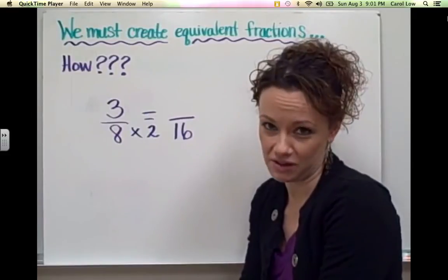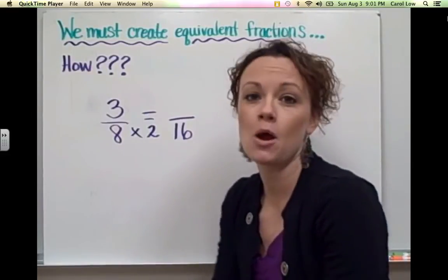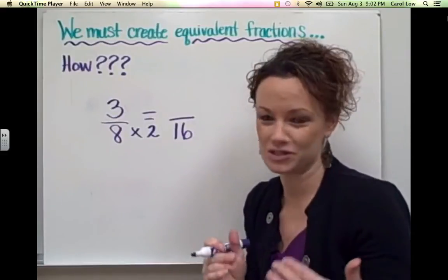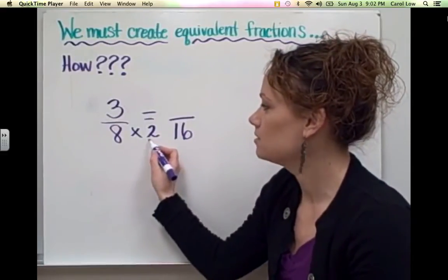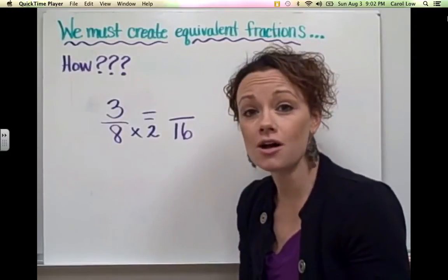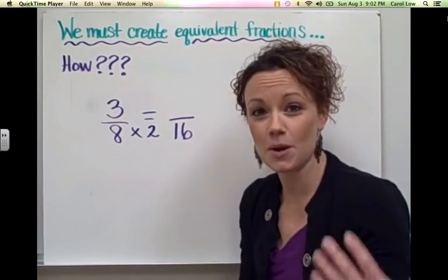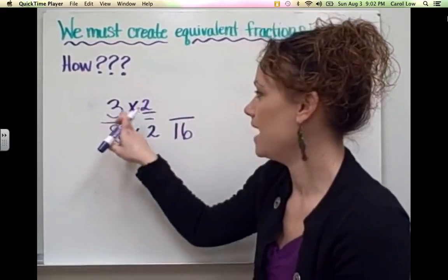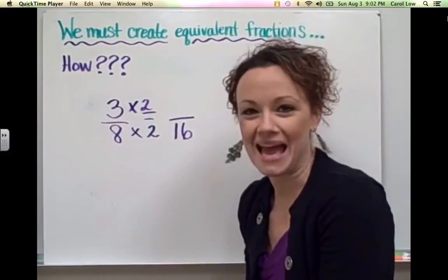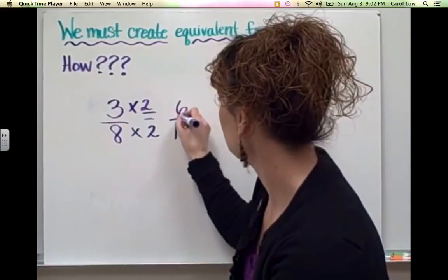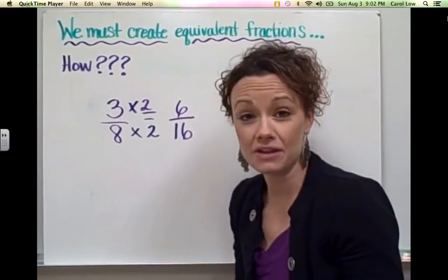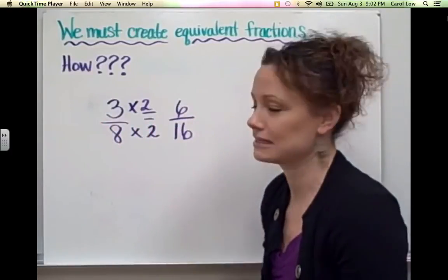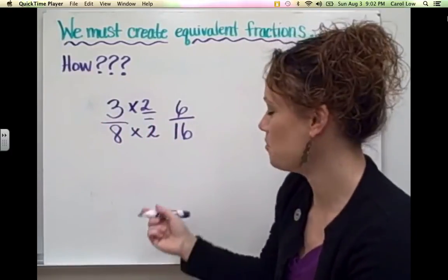Now there's a rule with equivalent fractions when creating them. Whatever you do to the numerator, you must do to the denominator or vice versa. So here we multiplied our denominator by 2, so we must also then multiply our numerator by 2. And when we have 3 times 2, we get 6. So we have just created an equivalent fraction that shows that 3 eighths is equivalent to 6 sixteenths. Let's try one more example.